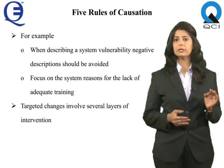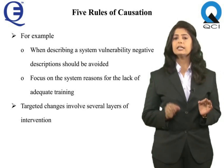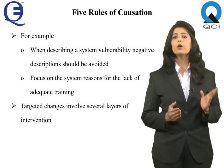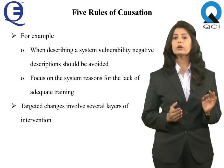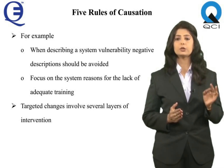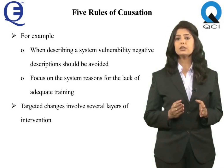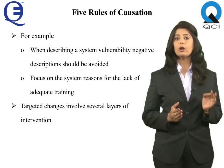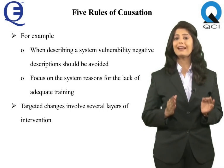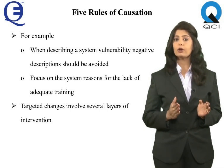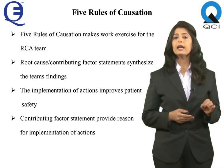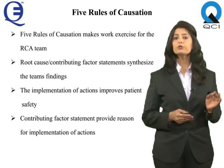For example, when describing a system vulnerability that involves staff training, it is particularly important to avoid negative descriptions — such as 'poorly trained pharmacist' — and to focus on the system reasons for the lack of adequate training. Often, targeted changes involve several layers of intervention, including staff training, policy creation or revision, electronic health record (EHR) changes or enhancements, and work area redesign.